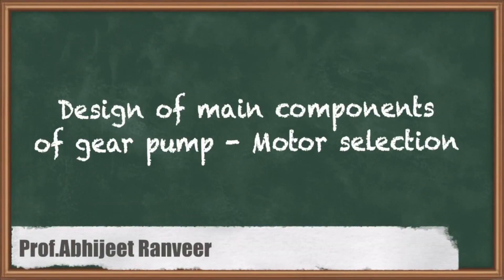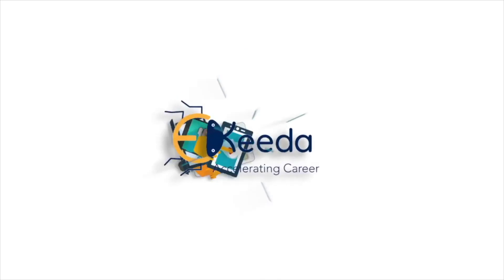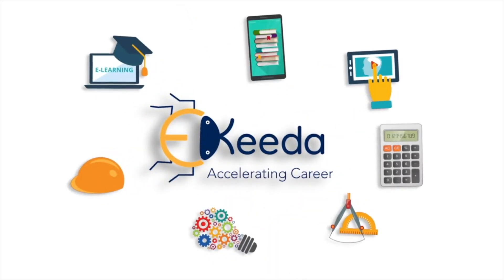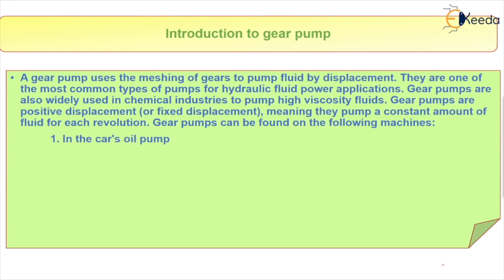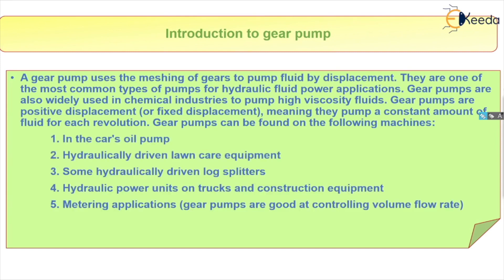In this video, we will see about the design of a gear pump. First, we will go with the introduction. The gear pump uses two meshing gears to pump fluid by displacement. It is one of the most common types of pumps for hydraulic fluid power applications. Gear pumps are widely used in the chemical industry to pump high viscosity fluids. They are positive displacement pumps, also called fixed displacement pumps, because they always pump a constant amount of fluid for each revolution.